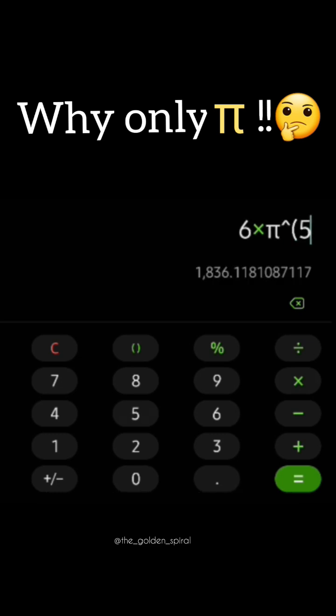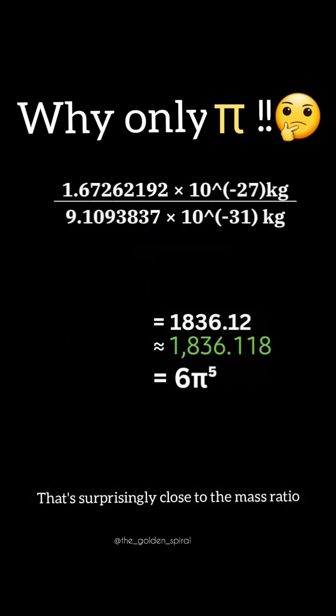If you multiply 6 by pi to the 5th power, you get a number that is surprisingly close to the mass ratio.